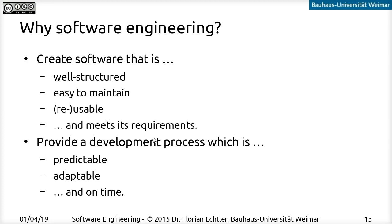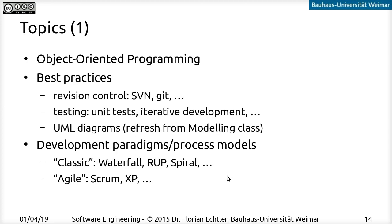To do that, we want a development process which is on the one hand predictable — if everything goes to plan, I want to be able to make an educated guess as to when everything will be finished. And it should also be adaptable, because usually things do not go according to plan. And last but not least, it should ideally be on time. So these are the things we want to achieve, and this is why we do software engineering.